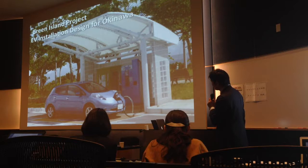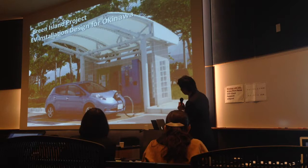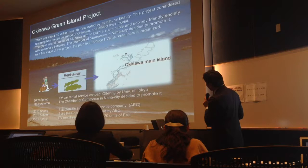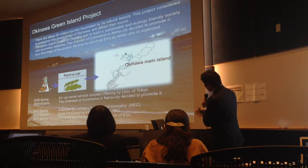First, we think about the electrical vehicle, and then stationary use. This is the example of the EV installation design for Okinawa. Okinawa has a good virtue: it is an island. So the key limitation for EVs is the drive range, which is limited within 100 miles.